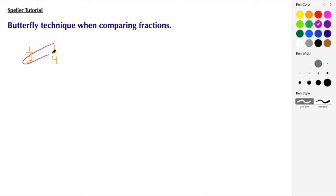So here 1 times 2 to give us 2, and compare that to 1 times 4 to give us 4. And here we see that 4 is greater than 2, so we can say that 1 half is greater than 1 fourth.